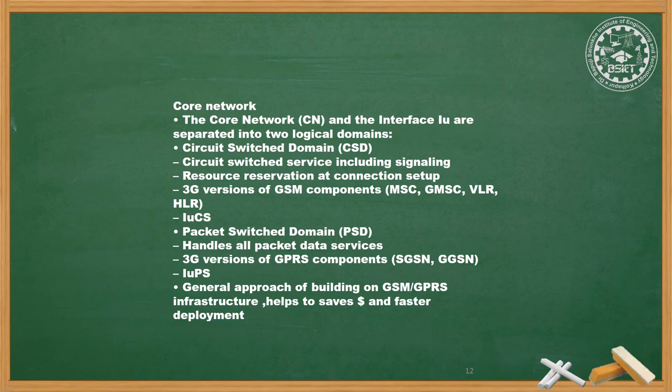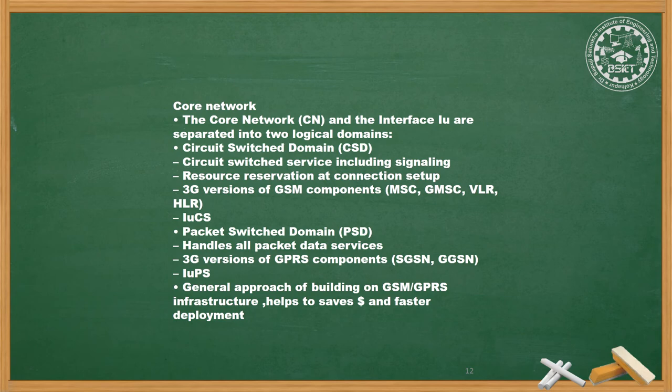The core network interface is separated into two logical domains: Circuit Switch Domain (CSD) and Packet Switch Domain (PSD). The circuit switch domain includes signaling, resource reservation at connection setup, and 3G versions of GSM/GPRS components: MSC, GMSC, VLR, HLR, and the IUCS interface unit. The packet switch domain handles all packet data services using 3G versions of GPRS components with IUPS. The general approach of building on GSM/GPRS infrastructure helps save costs and enables faster deployment.